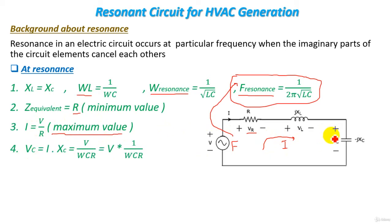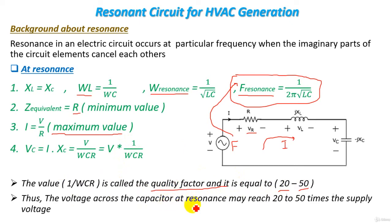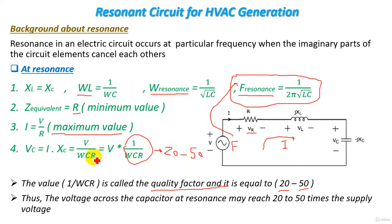We also have Vc, the voltage across the capacitor, which equals the current times the reactance of the capacitor Xc. This value equals V over ωCR, which can be written as voltage V times the quality factor. The quality factor 1/ωCR ranges between 20 and 50. So the voltage across the capacitor at resonance may reach 20 to 50 times the supply voltage, and we can make use of this phenomenon to increase the voltage across the capacitor.